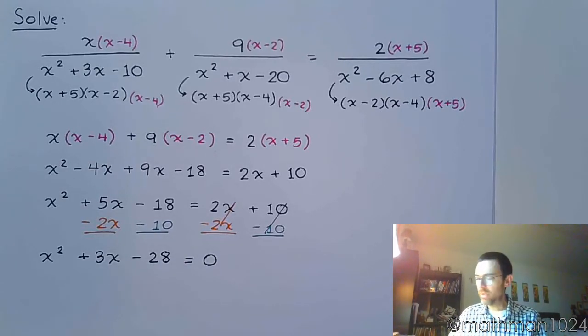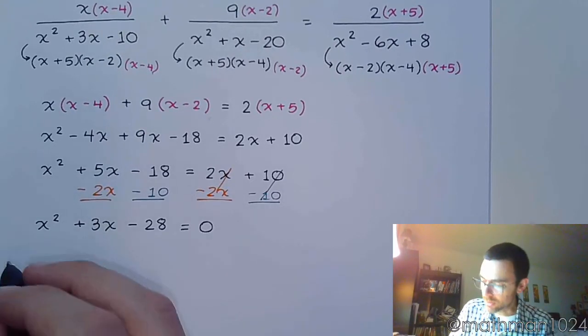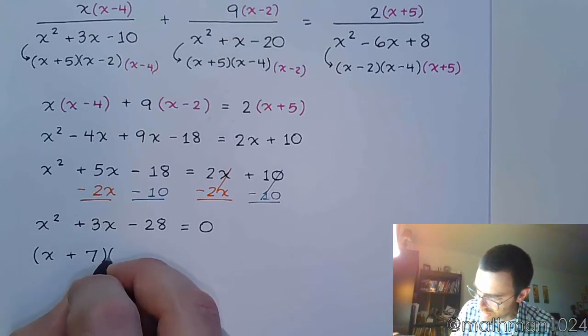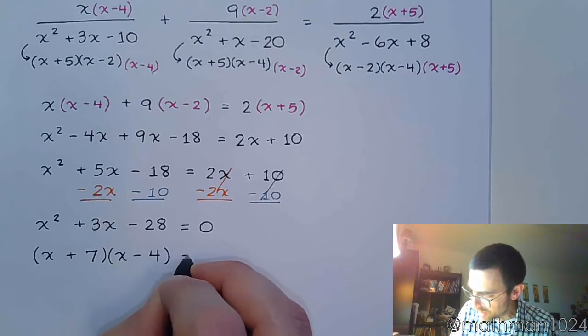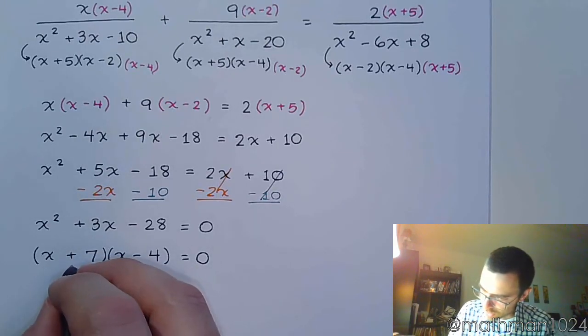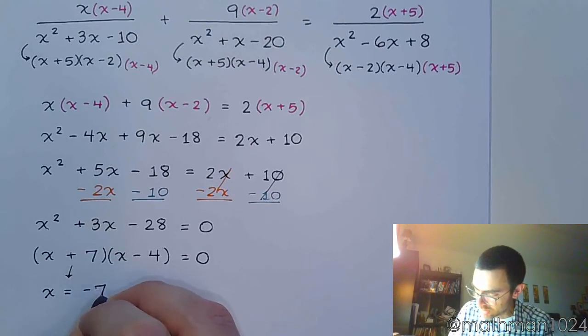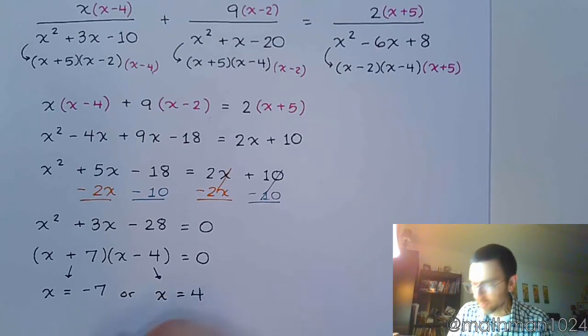Alright, doesn't look to be too bad. It's a nice polynomial, something that we should be able to easily factor. And you'll find out that this guy factors as x plus 7 times x minus 4. Alright, love it when it's got a lead coefficient of 1. And so, from here, x is equal to negative 7. Or, from the other factor, x equals 4.